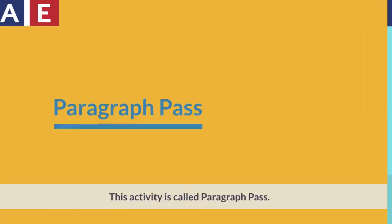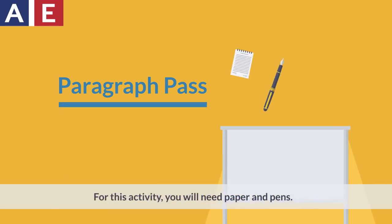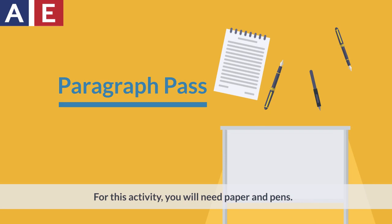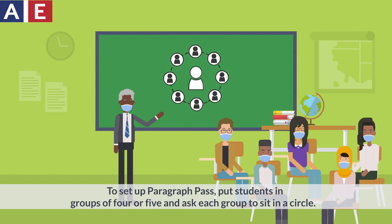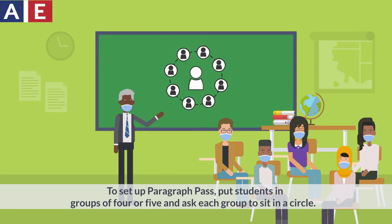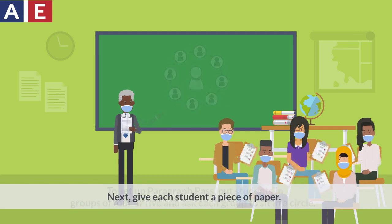This activity is called Paragraph Pass. For this activity you will need paper and pens. To set up Paragraph Pass, put students in groups of four or five and ask each group to sit in a circle. Next, give each student a piece of paper.